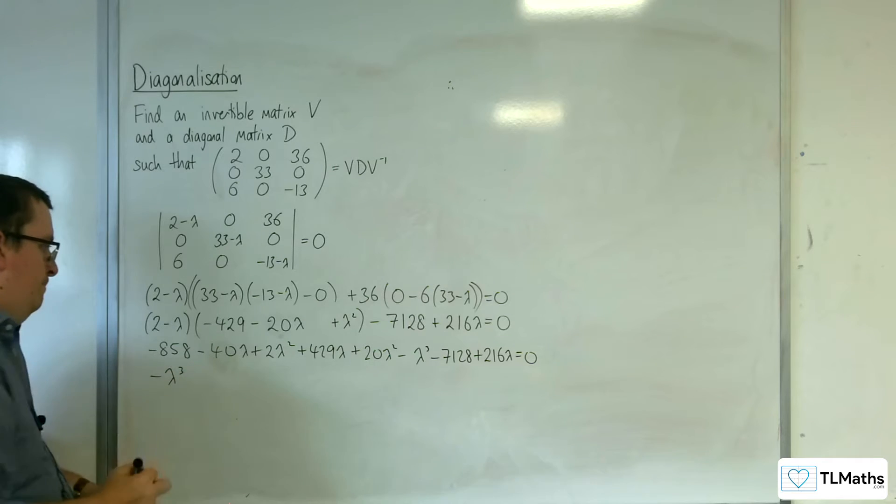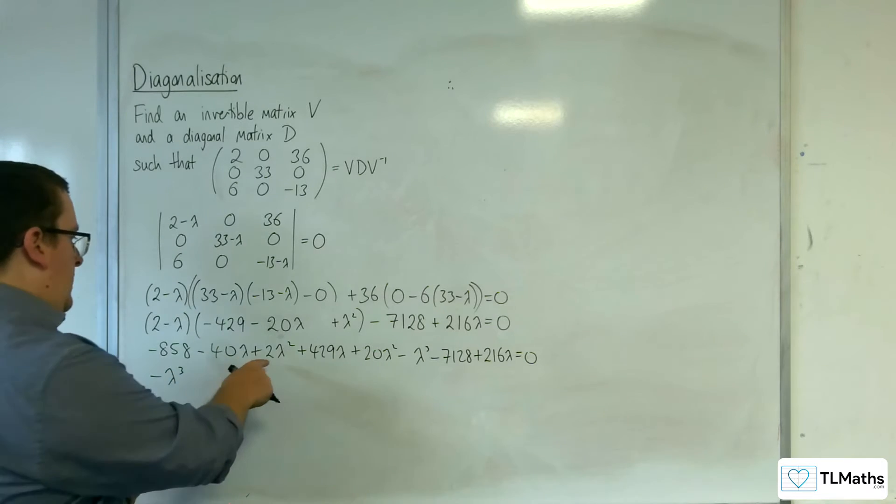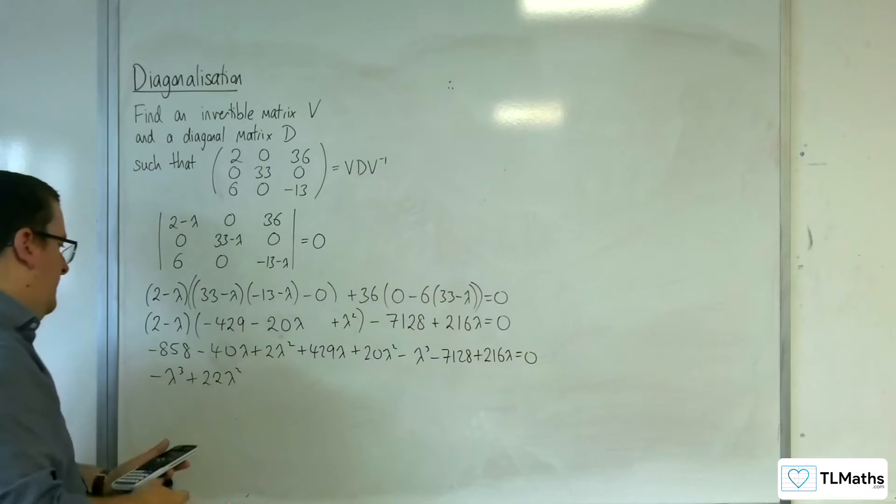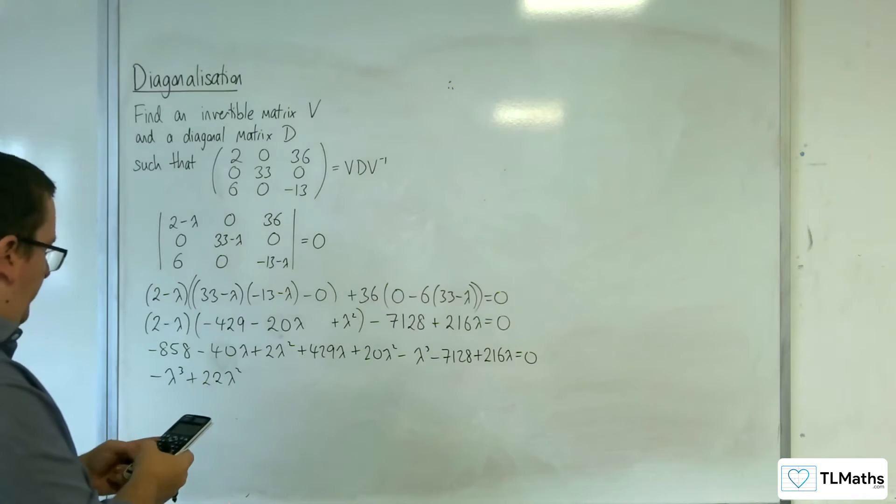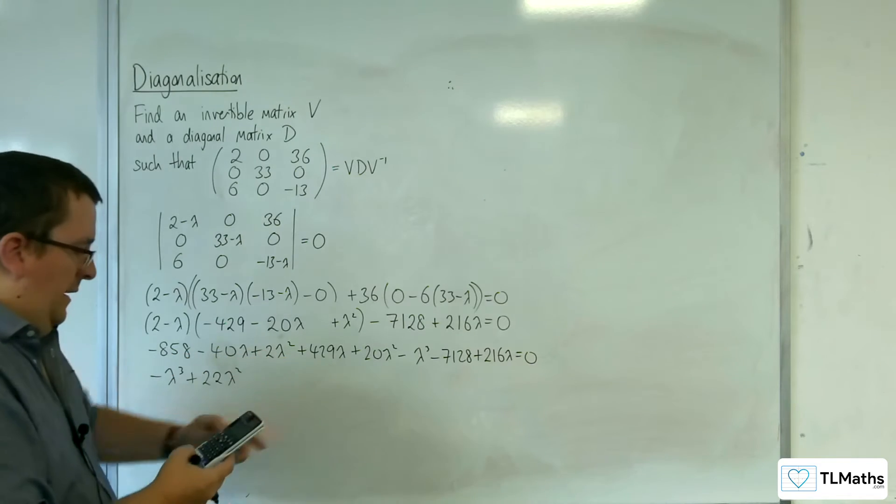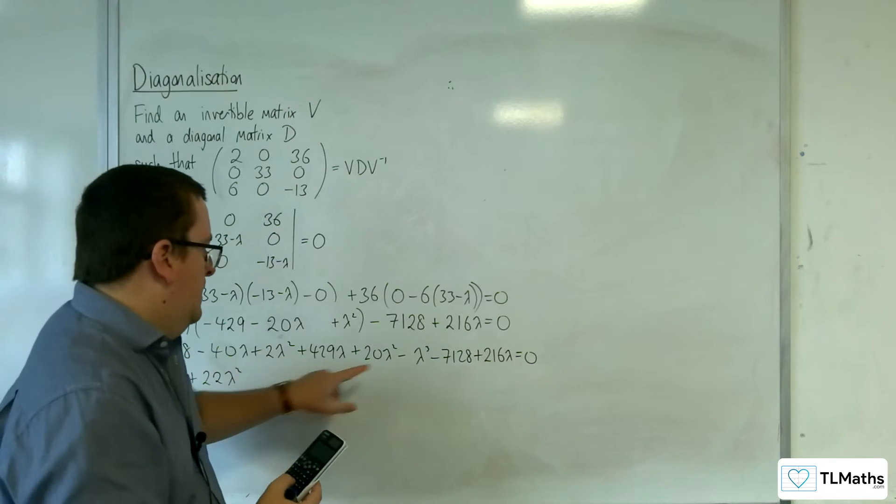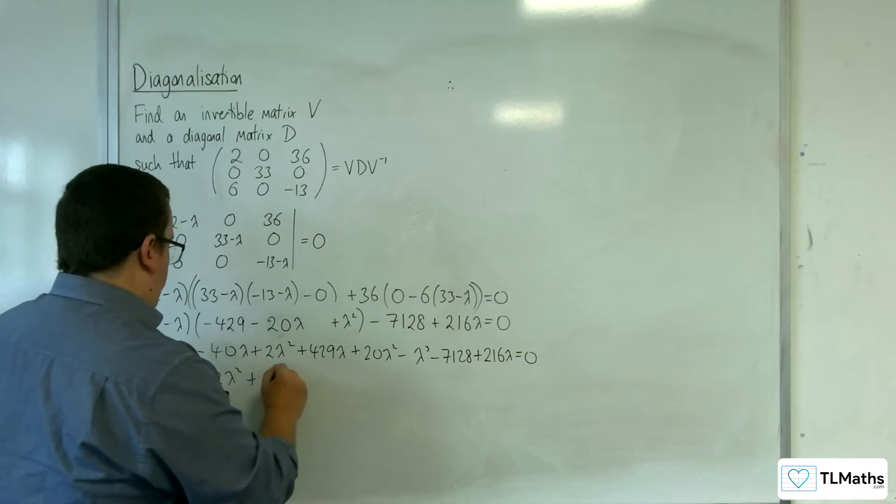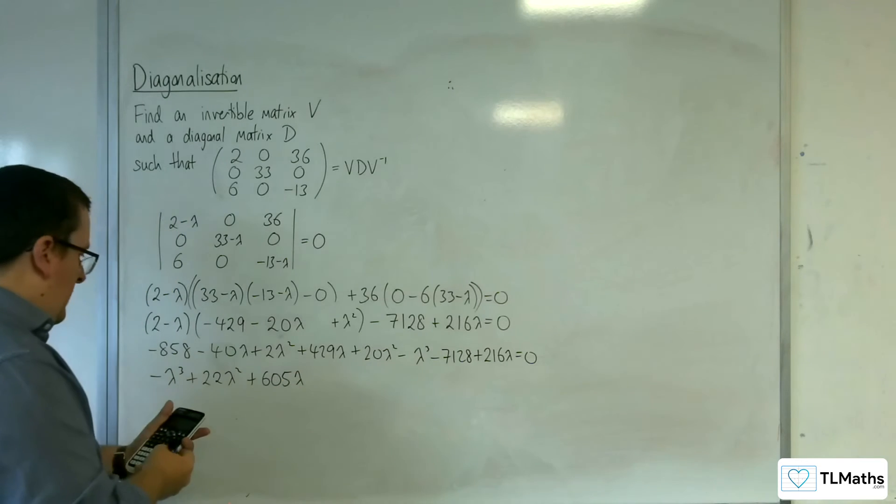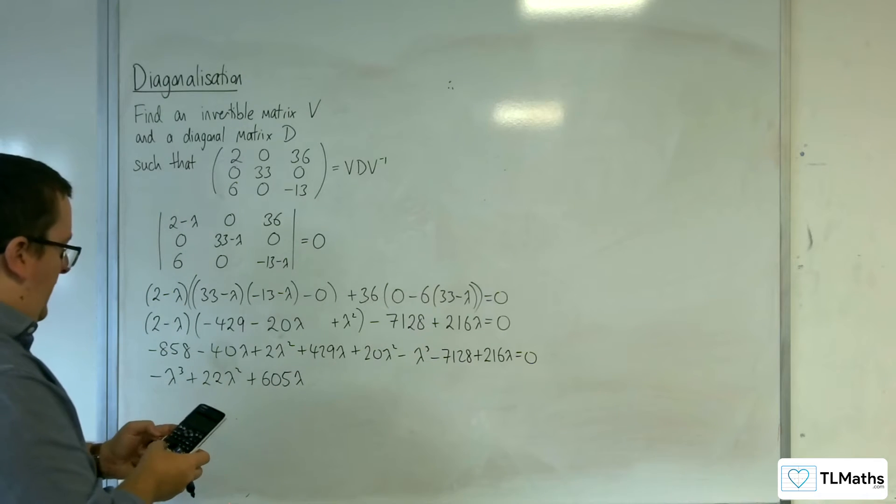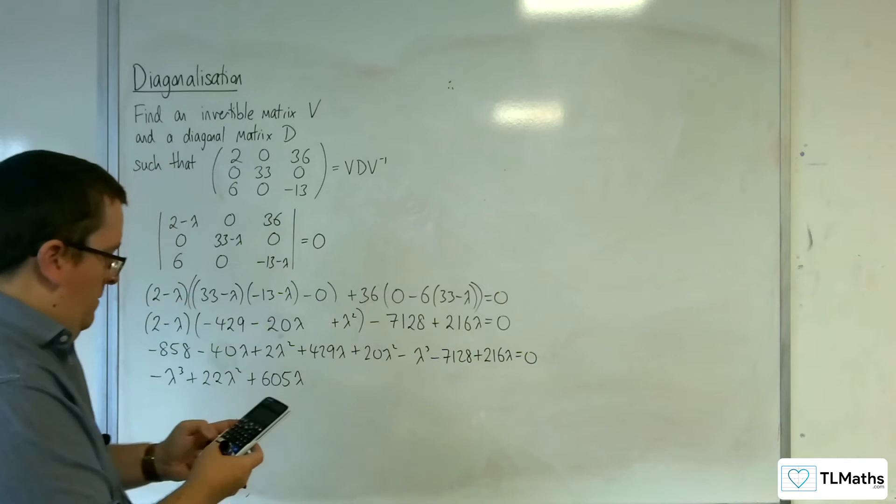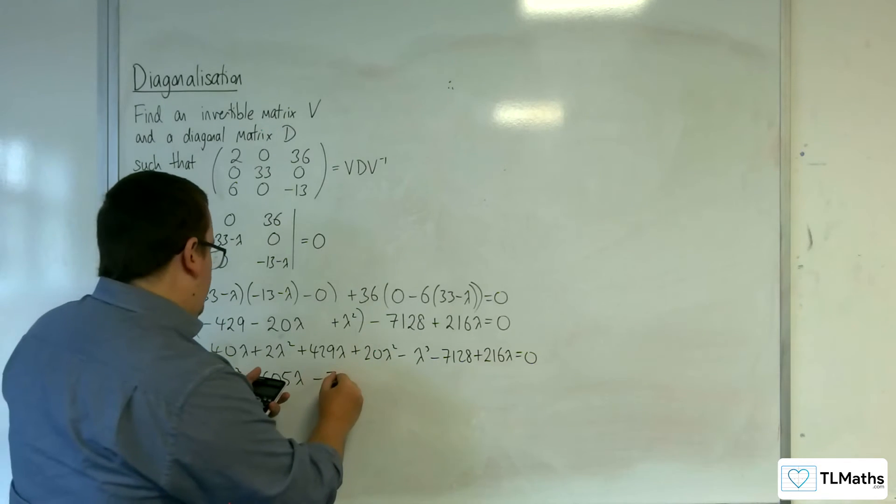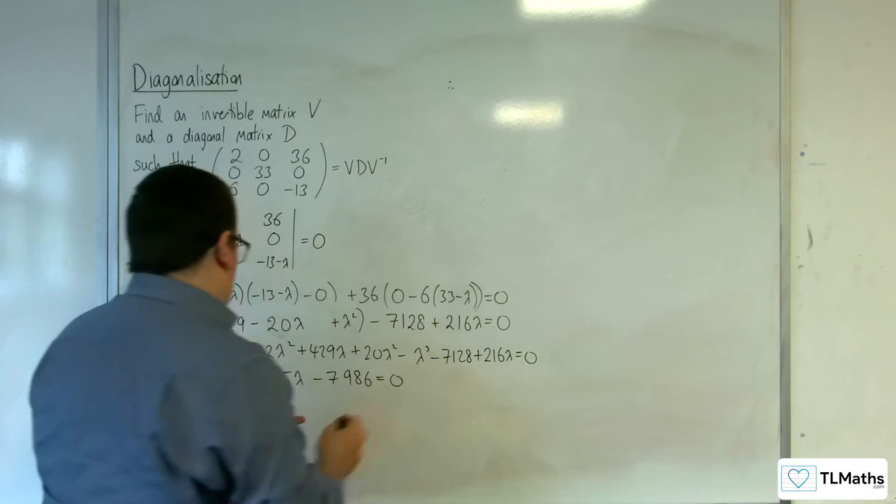We've got the minus lambda squared, so 22 lambda squared, we've got minus 40 lambda, plus 429 lambda, plus 216 lambda, so that's plus 605 lambda. Then we've got the minus 858, take away 7128, so that's take away 7,986, and that's equal 0.